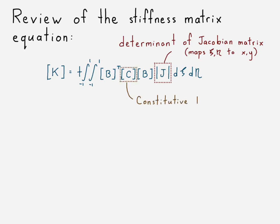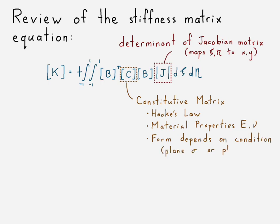We have our constitutive matrix, which is based on Hooke's law, and so it's really just composed of material properties. We have our elastic modulus, Poisson ratio, and the form depends on whether you're looking at plane stress or plane strain conditions.